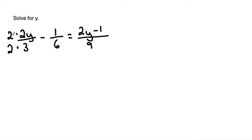So doing this step, 2 times 2 is 4, so 4y over 2 times 3 is 6, minus 1 over 6 is equal to 2y minus 1 over 9.